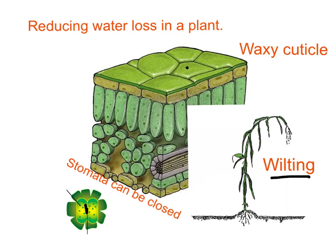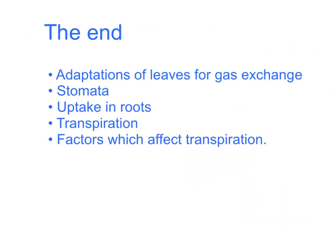That completes this presentation on exchange in plants. To summarise: we've seen the adaptations of leaves for gas exchange — flat shape gives bigger surface area, short diffusion distance, and stomata. We've looked at how stomata close at night to conserve water, root hair cells and their huge surface area for taking in water by osmosis and minerals by active transport, and defined transpiration as the evaporation of water from leaves. The factors affecting transpiration are warmth, dry air, air currents, and light intensity.